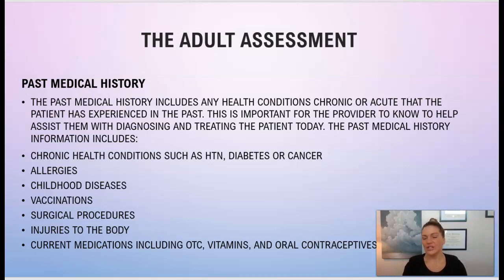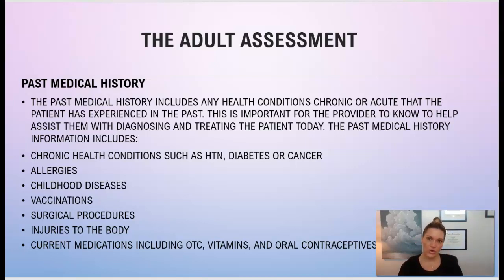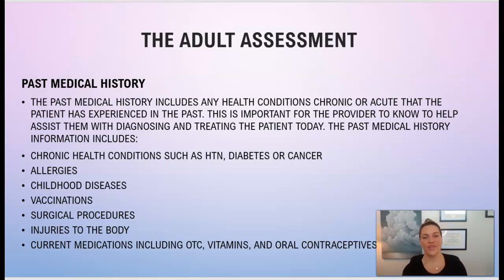Document any surgical procedures — has this patient had any surgery in the past? It could have been for any type of traumatic event, such as a fall on a broken hip requiring surgery for a new hip, having their appendix removed, or their gallbladder removed. You also want to document any injuries to the body — for example, the patient fell and had a broken hip, or they were in a car accident and had a broken arm or broken nose.